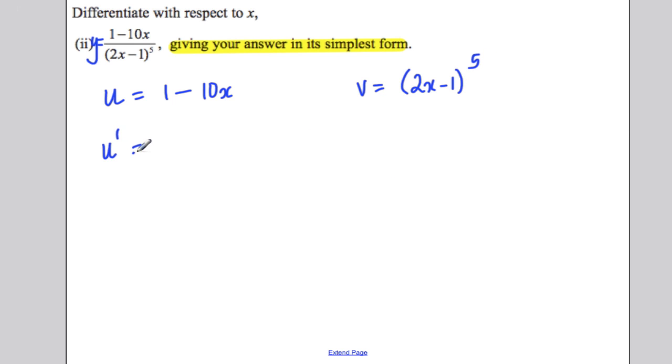Differentiating this, u dash: well, 1 differentiates to 0 and negative 10x differentiates to negative 10. Several people just wrote 10. You must get this right. It's very easy. And you must lay out your working like this to easily show the examiner what you're doing. Don't just start writing the quotient rule straight off the bat.